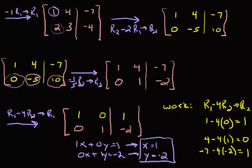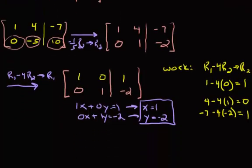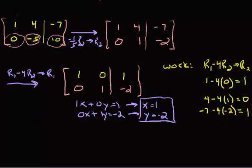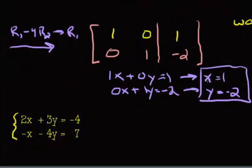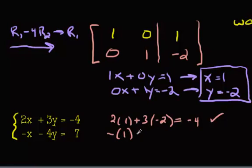Now if you would like to check it, what you would do is you would rewrite the system, which I've done in the bottom left corner, and then you would just plug in your answers and see if they work. So this is 2 times 1 plus 3 times negative 2, that's 2 minus 6, that's negative 4, so that one works. And we have negative x, which is 1, minus 4 times negative 2, that's negative 1 plus 8, positive 7, which checks out. So there you go, that's row reducing a 2 by 3, a 2 equations, 2 variable problem.